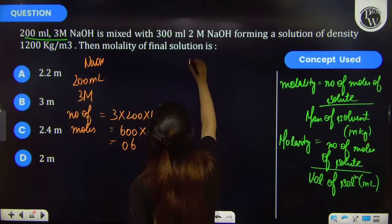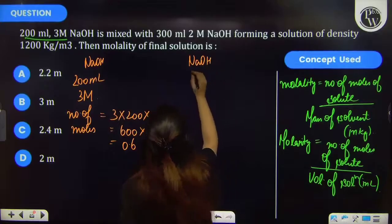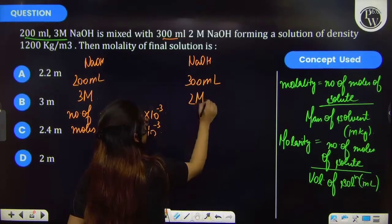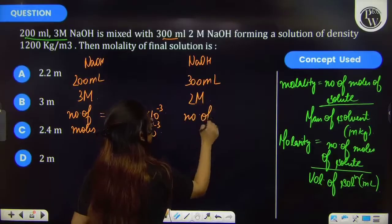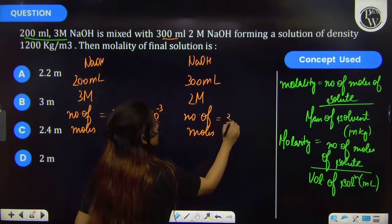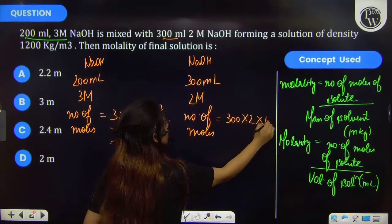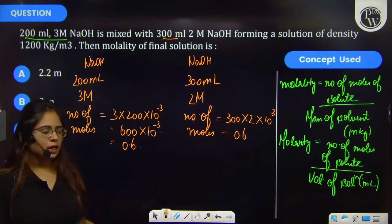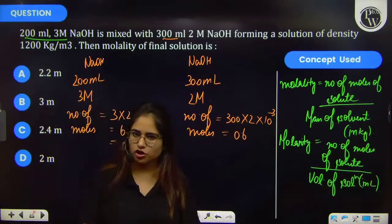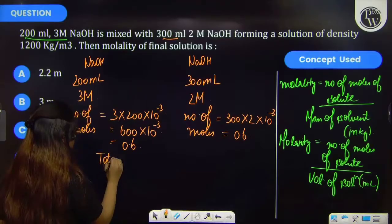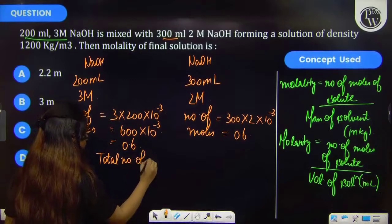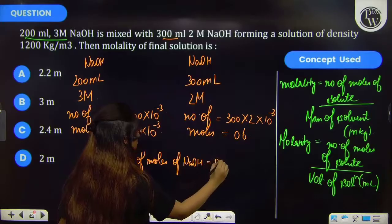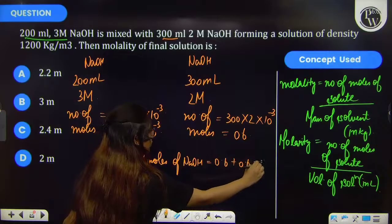Further, if I talk about the next solution of NaOH, then its volume is 300 ml and its molarity is 2 molar. So number of moles will be 300 into 2 into 10 raised to the power minus 3 and that will come out to be 0.6. Now, number of moles will be added because we will be adding the solutions. So total number of moles of NaOH will be 1.2.